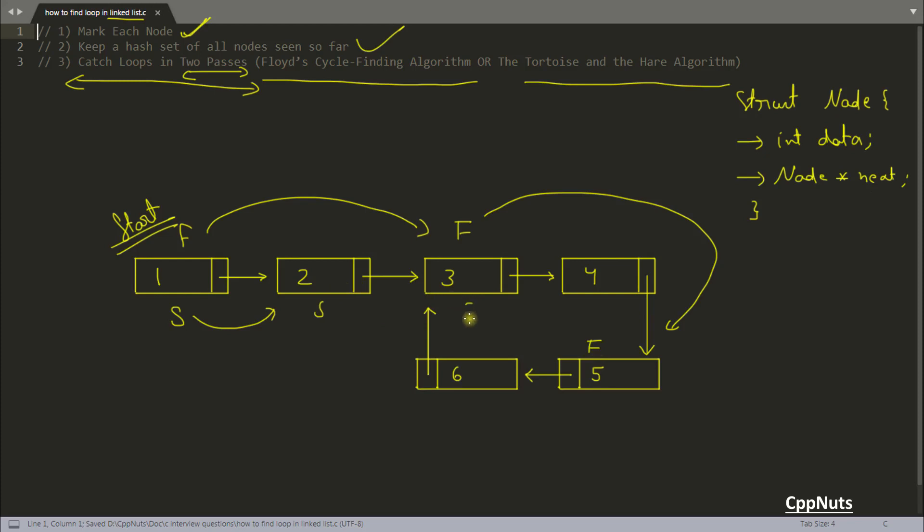Fast and slow will come here. They are again not equal so you will move fast here. Again you will have fast again and slow will go here. Now again fast will go here, I mean here, and slow will go here. As you can see fast and slow both are at same location.